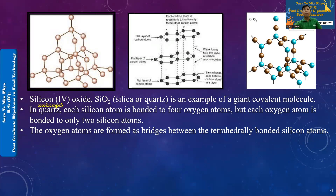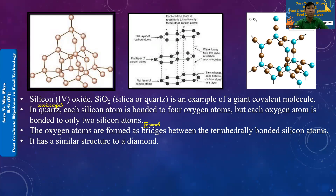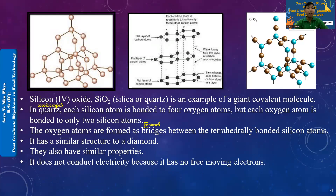Between the tetrahedrally bonded silicon, it also didn't go to silicon and also siliconic acid — silicon silicon — it has a similar structure to diamond. It was saying it is possible to buy it. They also have similar properties: it is not going to conduct electricity, because it has no free moving electrons.